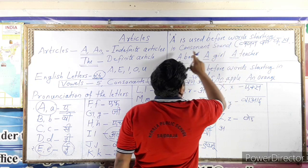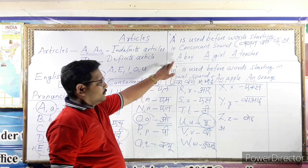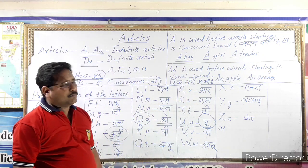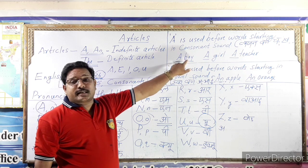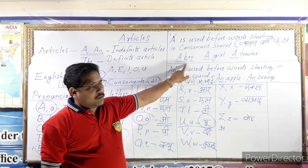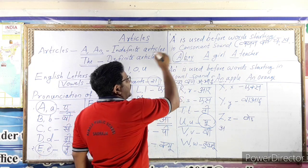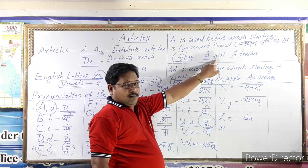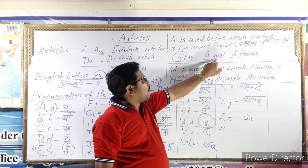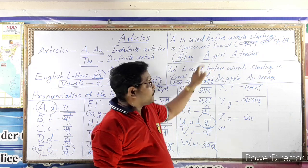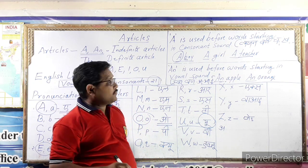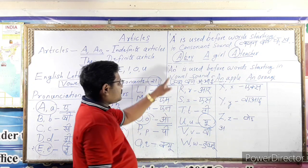A is used before words starting with a consonant sound. Look at the examples. A boy — the pronunciation of B-O-Y starts with B, which is not a vowel sound, so we say 'a boy.' A girl — G is a consonant sound, so 'a girl.' A teacher — T is the consonant sound, so 'a teacher.'